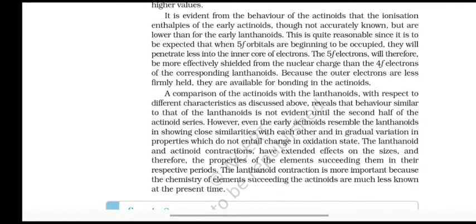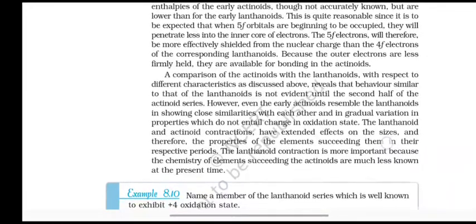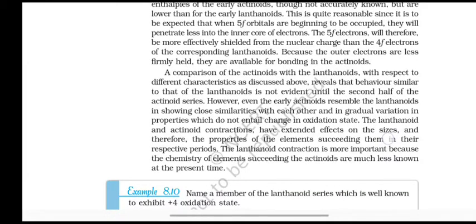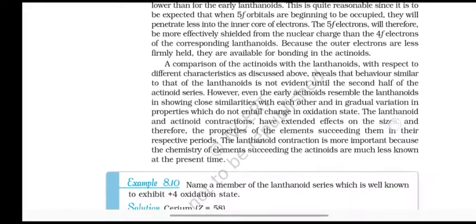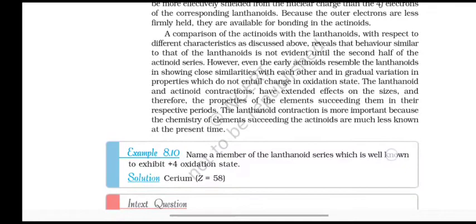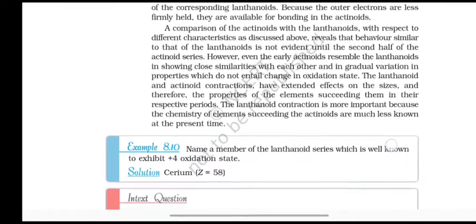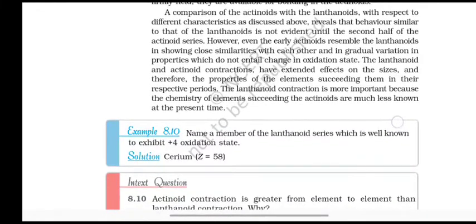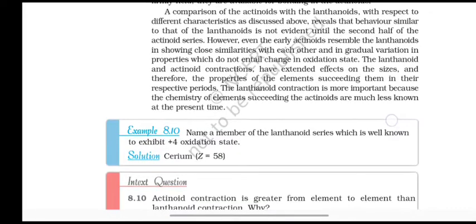It is evident from the behavior of actinoids that ionization enthalpies of the early actinoids, though not accurately known, are lower than for early lanthanoids. This is quite reasonable since it is to be expected that when 5f orbitals are beginning to be occupied, they will be more effectively shielded from the nuclear charge than the 4f electrons of the corresponding lanthanoids. Because the 5f electrons are less firmly held, they are available for bonding in the actinoids.